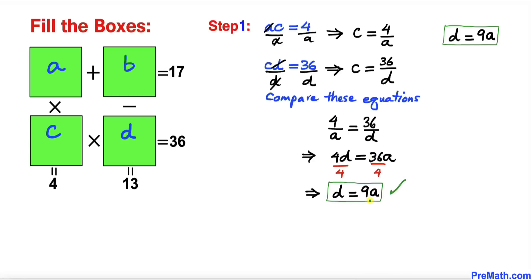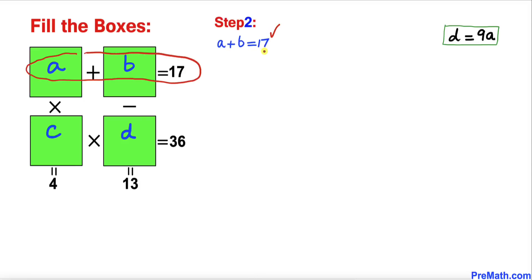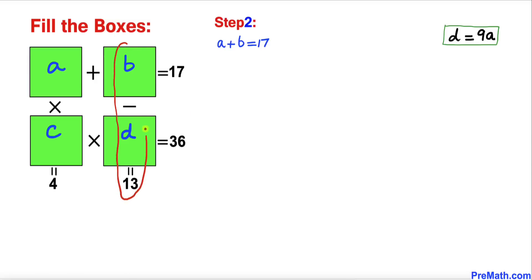So we've established that D equals 9 times A. Now let's focus on the two horizontal boxes: A plus B equals 17. And for the two vertical boxes: B minus D equals 13.